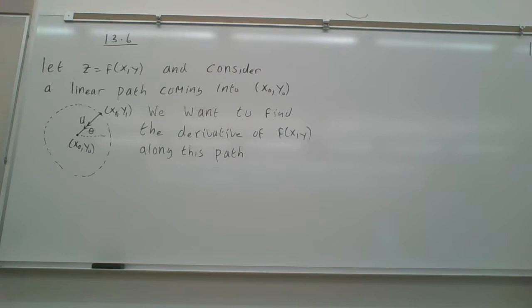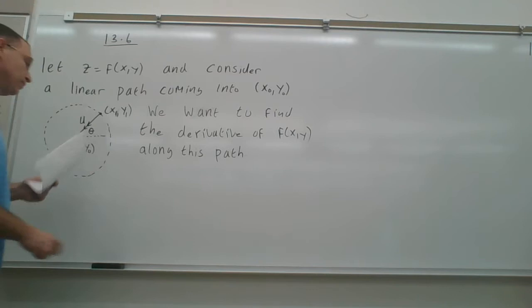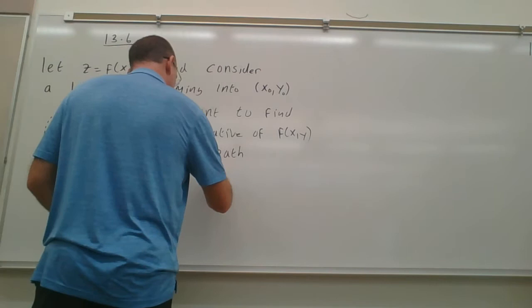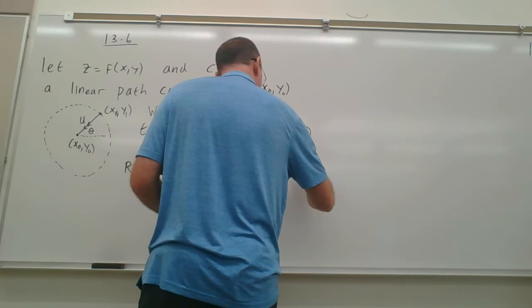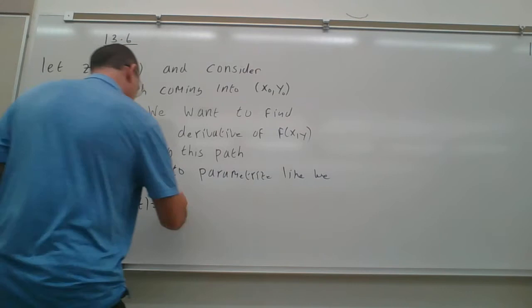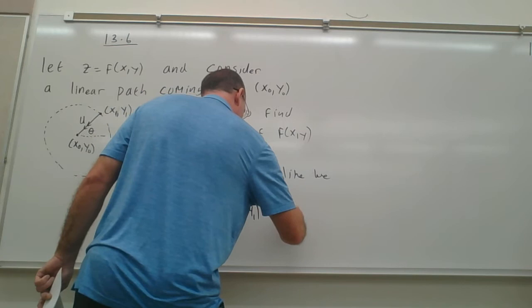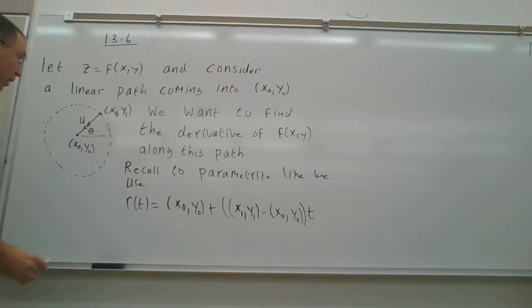This is section 13.6. We have a function f(x,y) and a linear path coming into (x₀, y₀), which I've drawn here. We want to find the derivative along this path. To parameterize a line, we use r(t) equal to the first point (x₀, y₀) plus the difference of the second point minus the first point times t.